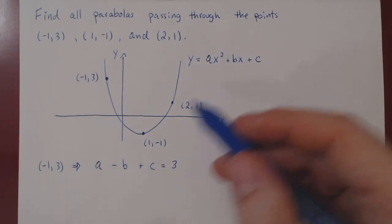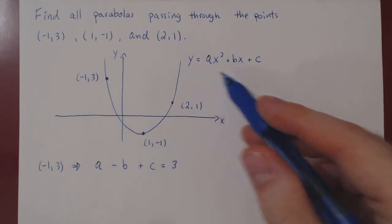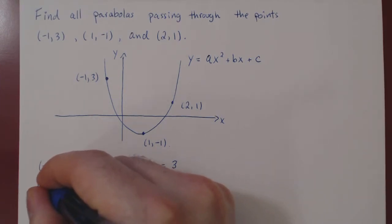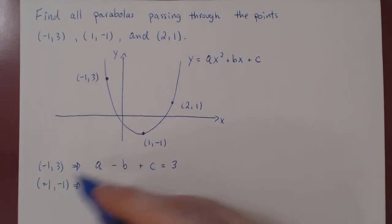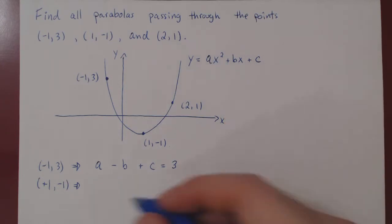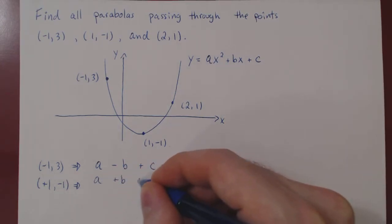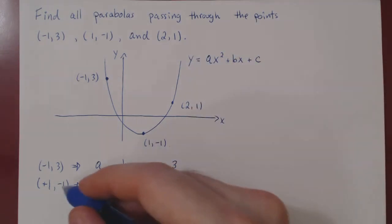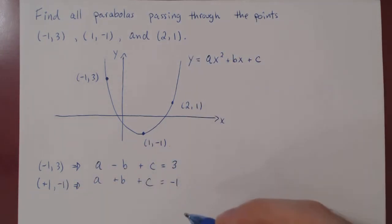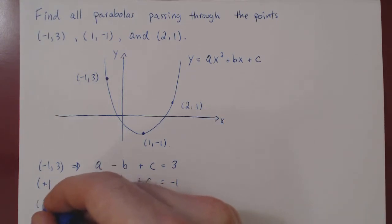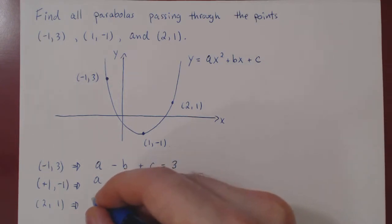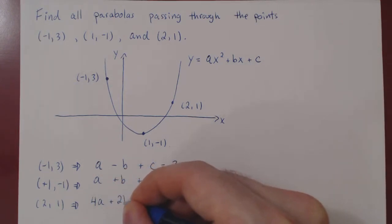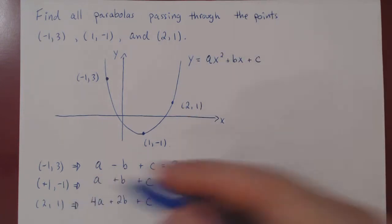But it's not the only one. This point also must satisfy the equation of our parabola, so we can make a similar substitution. Positive one, negative one. So we replace x by positive one, and we'll simply get a plus b plus c, equals y, which in this case is negative one. And finally, third point, third equation, positive two, positive one. If you replace x by two, then you get 4a plus 2b plus c, which equals y, which in this case is positive one.